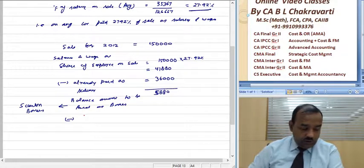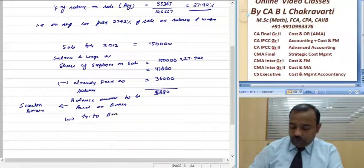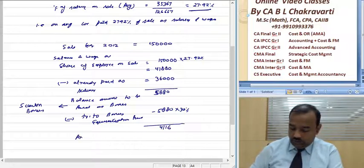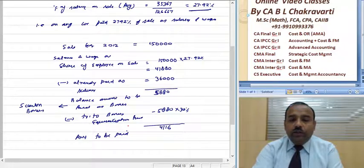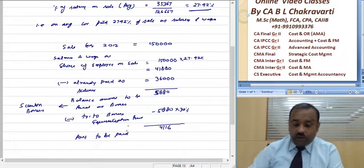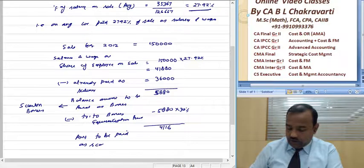Now we transfer to bonus equalization fund 30% of 5,888. So the remaining amount to be paid is 4,116. This is the Scanlon bonus amount available to be paid.